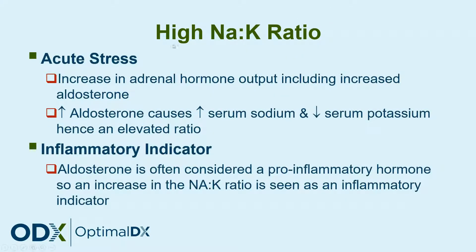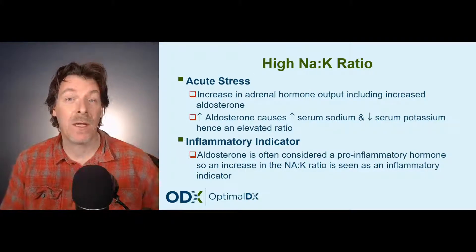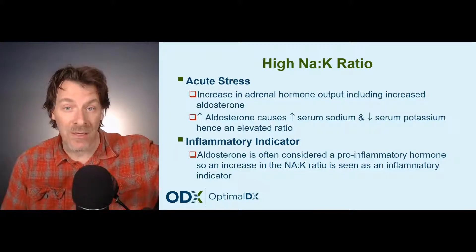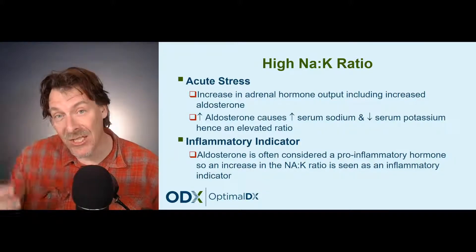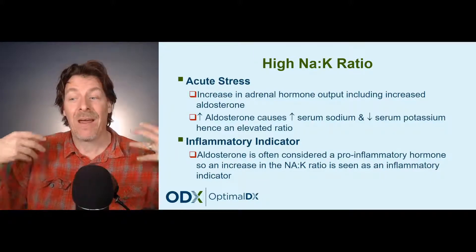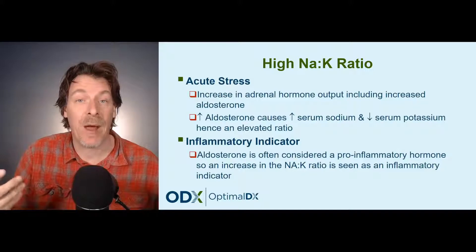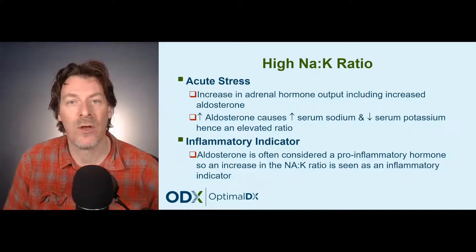Let's talk about a high sodium-potassium ratio. The first thing to look at is its relationship to acute stress. Acute stress causes an increase in adrenal activity and an increase in aldosterone output. Aldosterone causes sodium to be retained in the body, increasing serum sodium, and also causes a decrease in serum potassium. So when the numerator — sodium — is increased and the denominator — potassium — is decreased, we get an increase in the ratio, which tells us about acute stress and its impact on adrenal hormones.